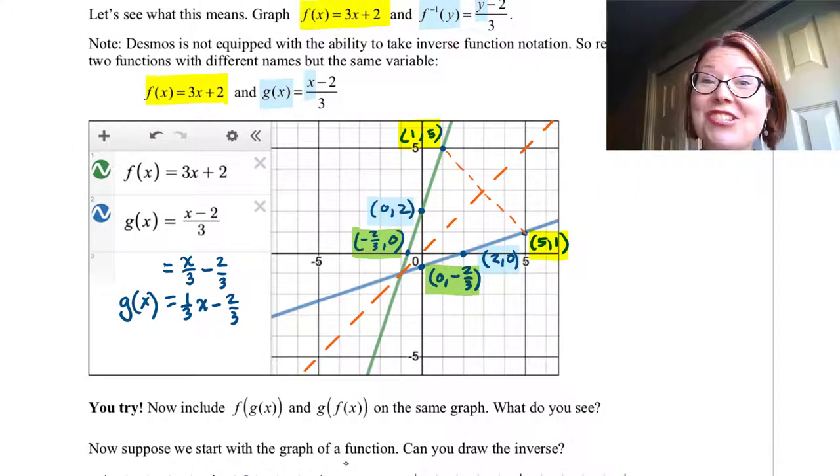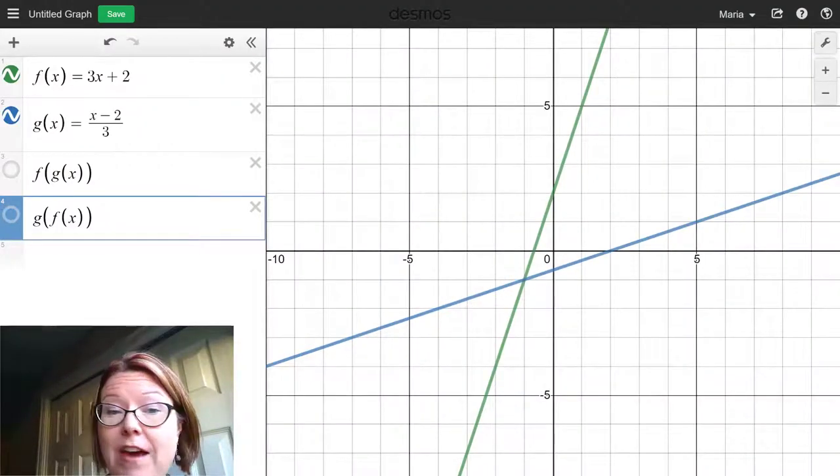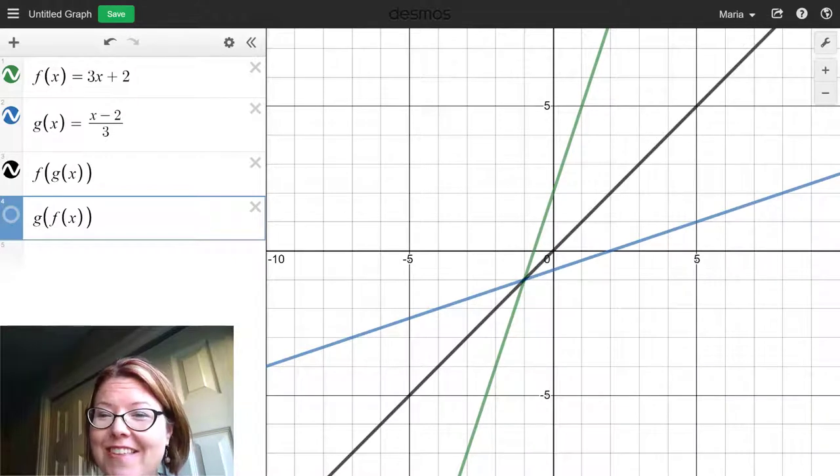Okay, we're back. Let's jump over to Desmos and see what happens. I have my graphs of f and g on here, and I'm going to include the graph of f(g(x)). And you'll see that that gives me the perfect diagonal y = x.